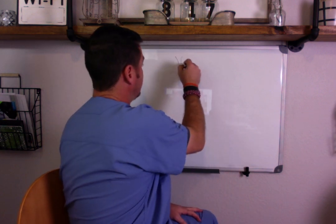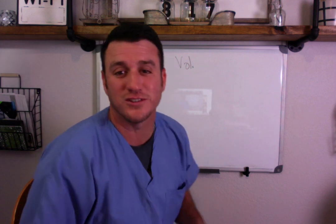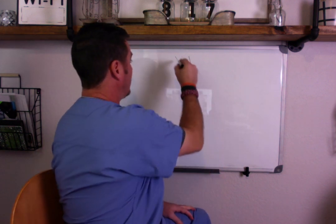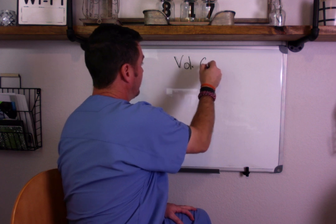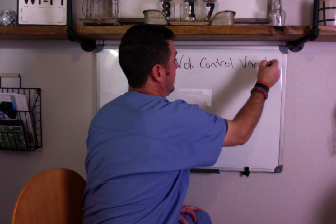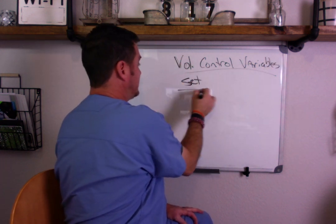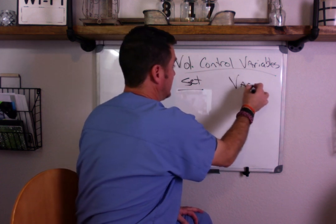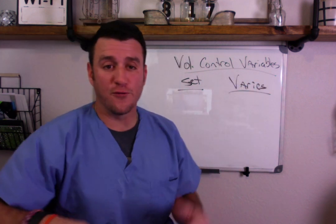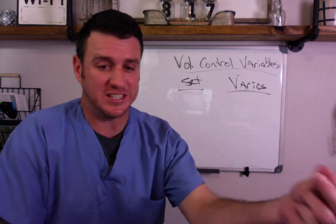Let's talk about volume control and the variables. We're talking about volume control, and what we need to understand is what is set and what varies. In volume control, we have some very specific numbers that we set, and then some very specific things that vary from that.